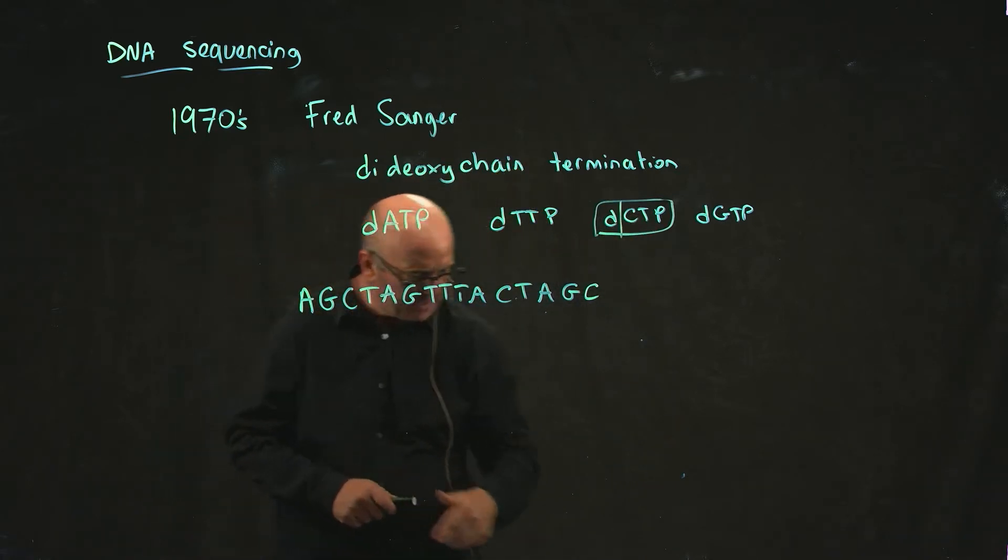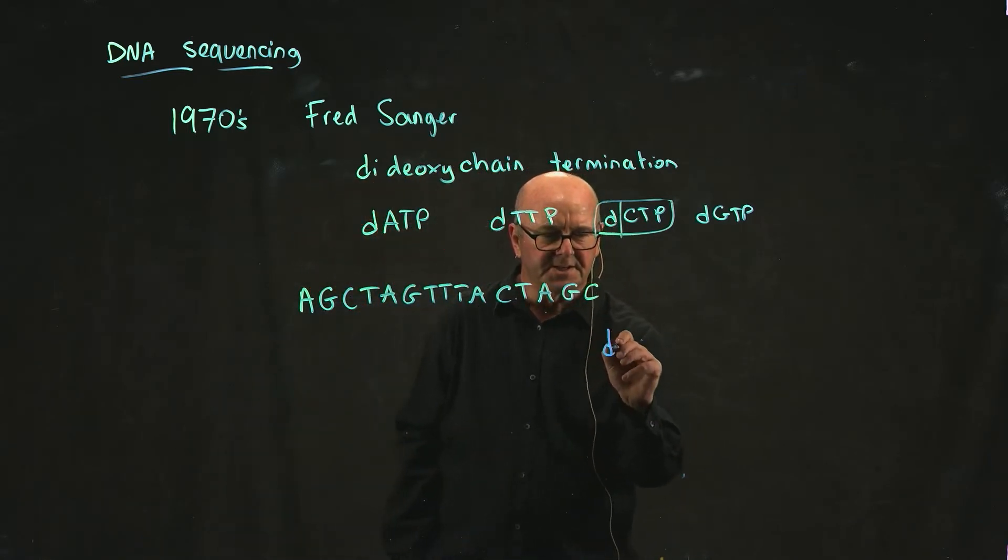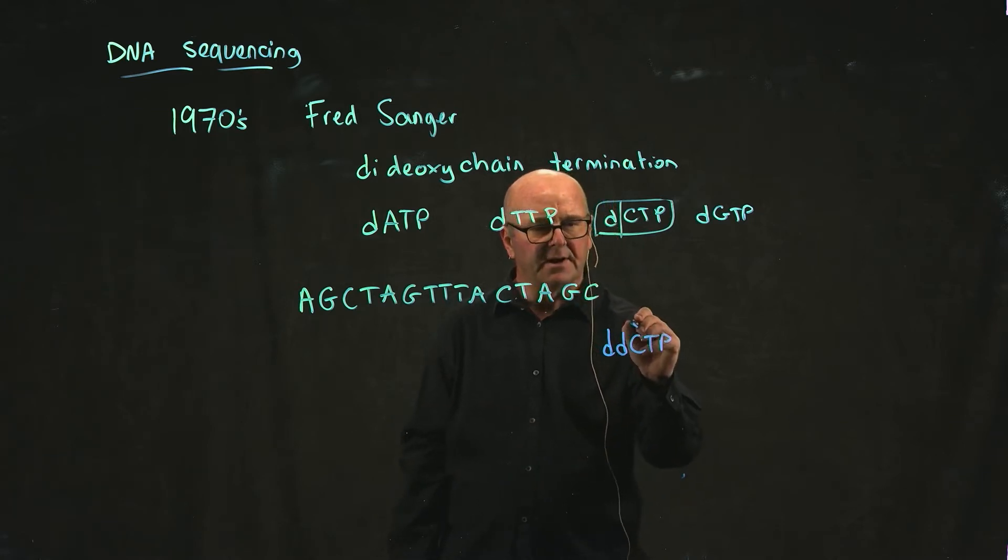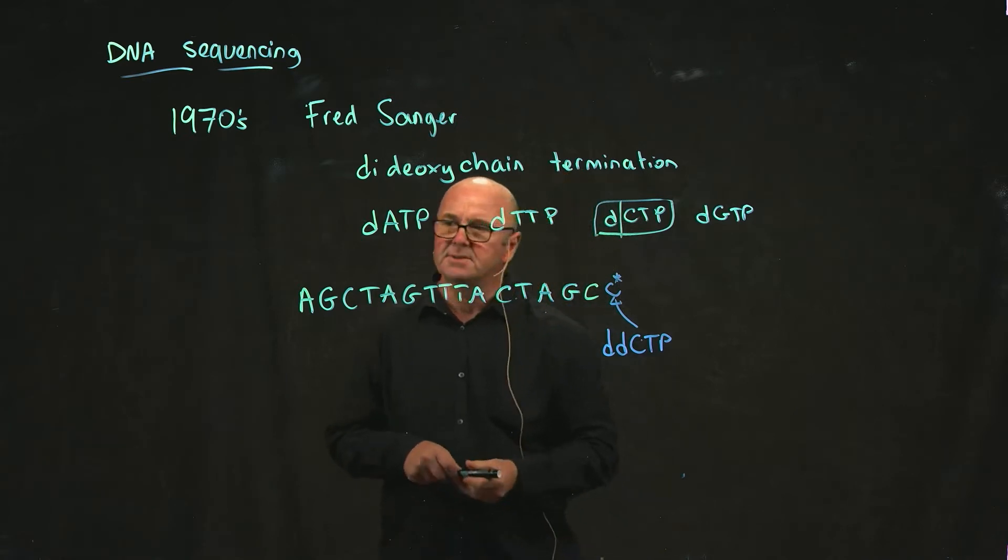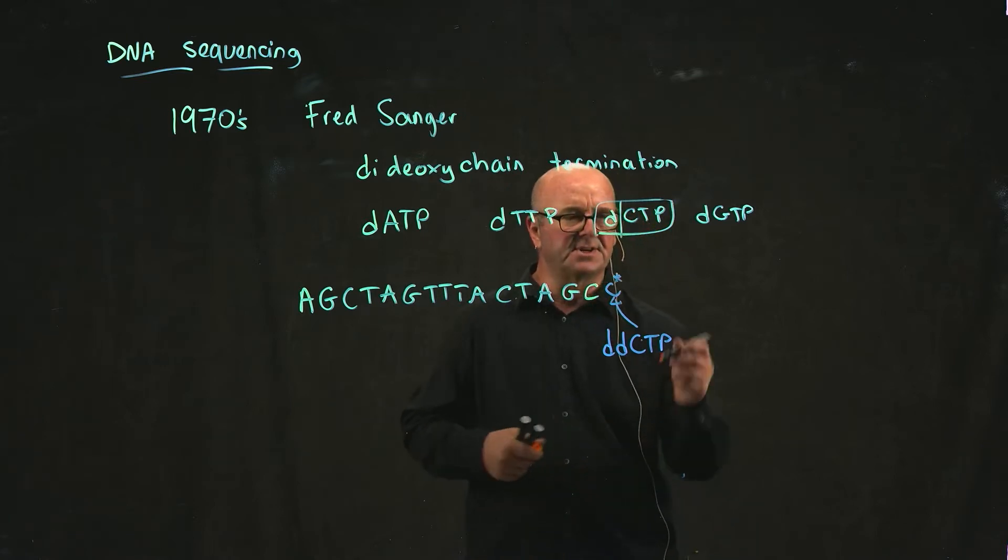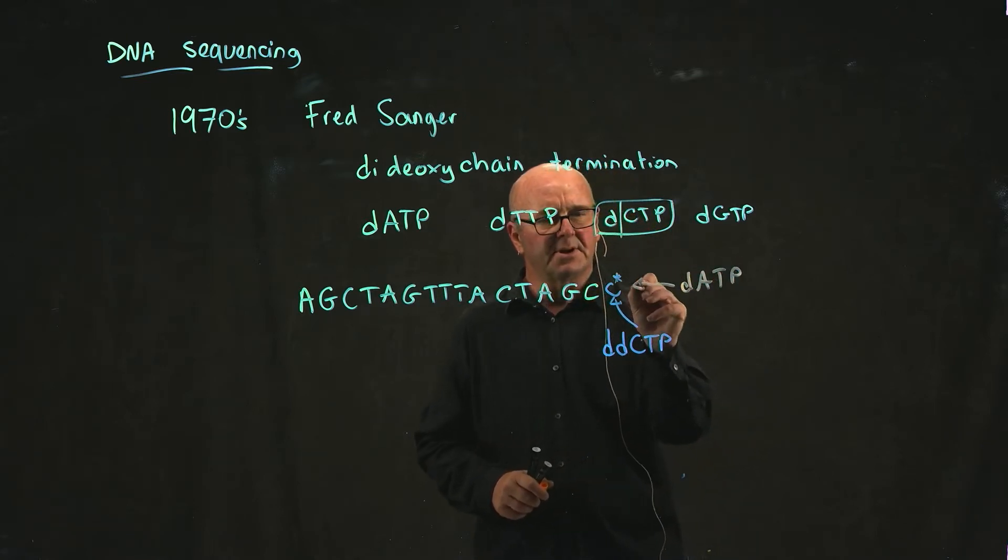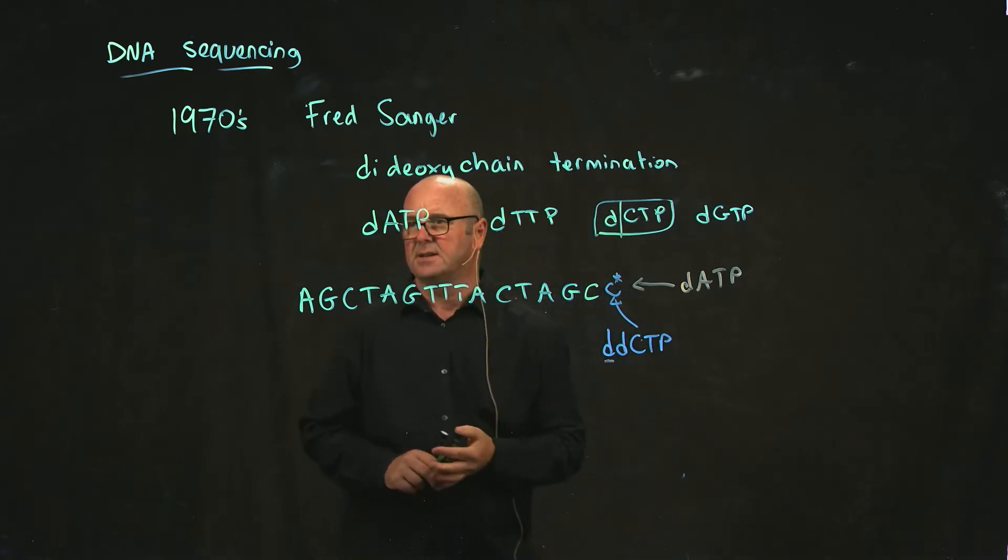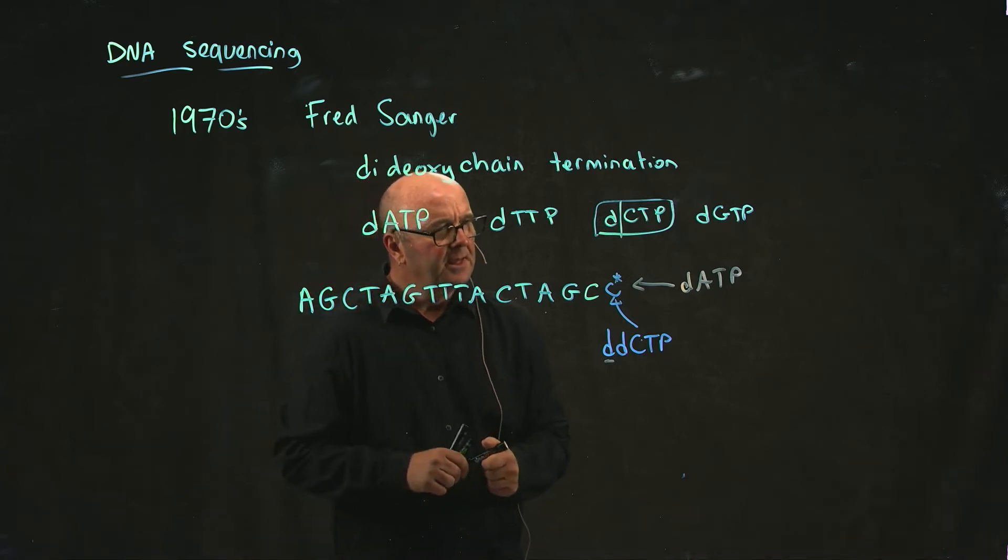What Sanger knew was that if you mixed into this a dideoxy CTP, when it got added to this chain as a C, that chain was terminated and there was no way you could add a new molecule to it. So if you tried to add something, for example a dATP, it's blocked because of the second deoxy part of the ribose molecule.